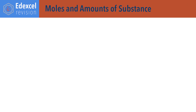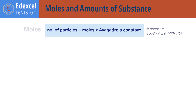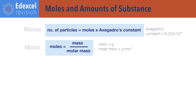For moles and amounts of substance: number of particles equals moles of particle times Avogadro's constant, where the value of Avogadro's constant is 6.022 times 10 to the 23. Moles equals mass divided by molar mass. Note that the units for mass must be grams and molar mass grams per mole.